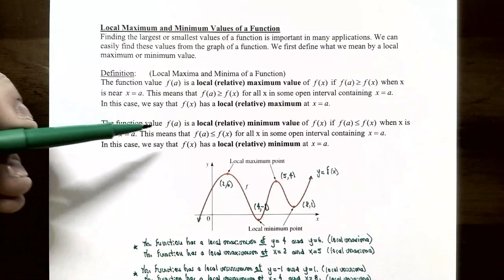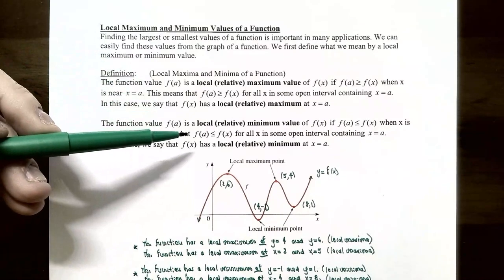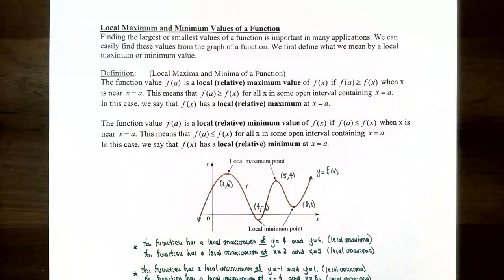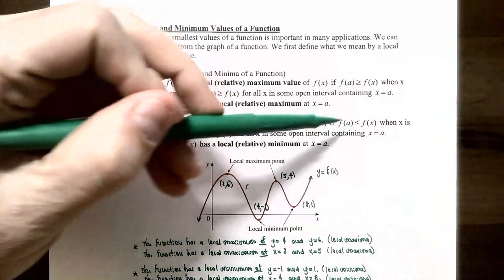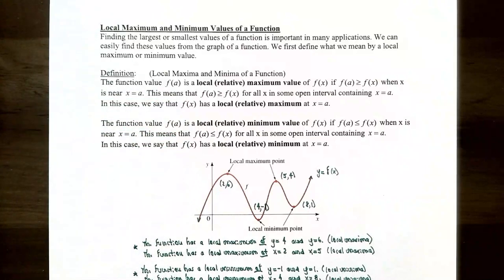On the other hand, the function value f(a) is called a local or relative minimum value of f(x) if f(a) is less than or equal to f(x) whenever x is near x = a — for all x values in some open interval containing x = a. The function has a local minimum at x = a. The y value f(a) is the minimum value when it is the smallest compared to all nearby y values. The minimum value is f(a), the output value.